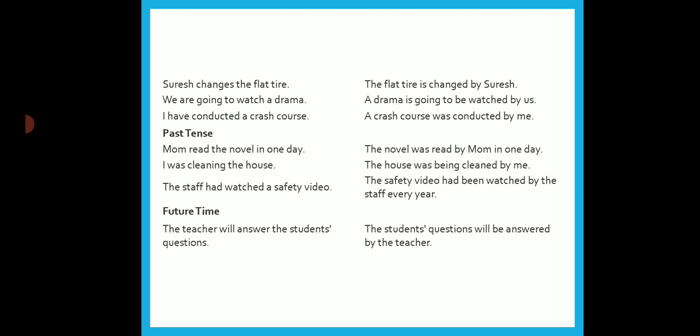Now we have a conversion table. On the left-hand side you have active voice, and on the right-hand side you have passive voice. The first three sentences are in different forms of present tense. First: 'Suresh changes the flat tire' — this is simple present tense, as you can see from the verb 'changes.' In passive voice: 'The flat tire is changed by Suresh' — write the object first, then the be form 'is,' then the past participle 'changed,' then 'by' and the agent.